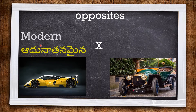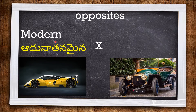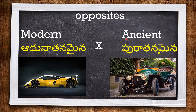The next one is MODERN, meaning contemporary. This Ferrari car is a modern one. The opposite of modern is ANCIENT, which means very old. This car is an ancient one.